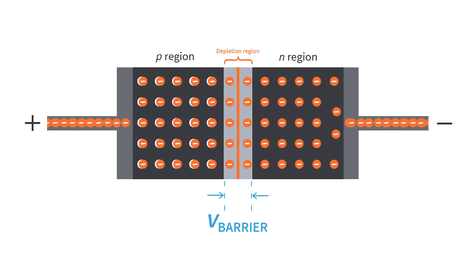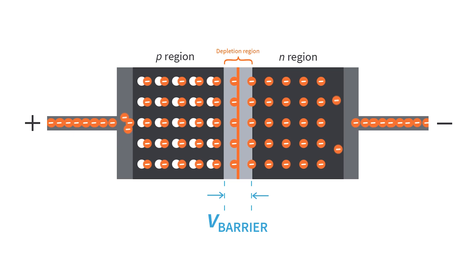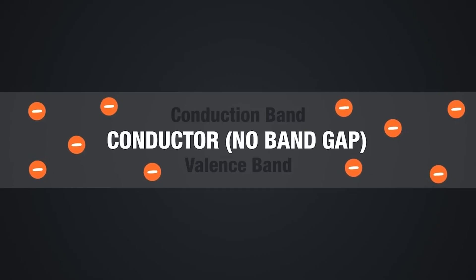The valence electrons also immediately turn into free electrons because, as what we have discussed in our previous tutorial, it takes almost no amount of energy for an electron in a conductor to jump from the valence into the conduction band, since the valence band and the conduction band in a conductor overlap.